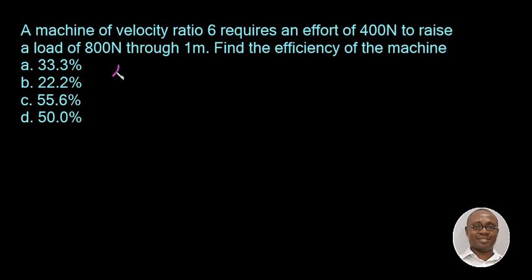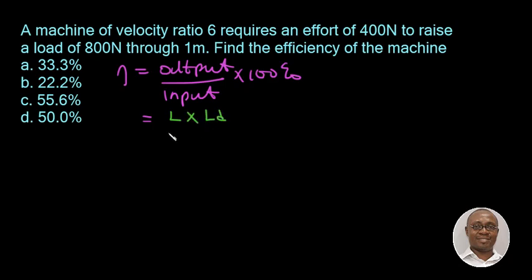Remember that the efficiency of a machine, the formula is equal to output over input times 100%. But with this we cannot just quickly go to input the values. So in order to input the values we need to show the derivation. So for output the formula is load times the distance traveled by load to be divided by input which is effort times the distance traveled by effort times 100%.